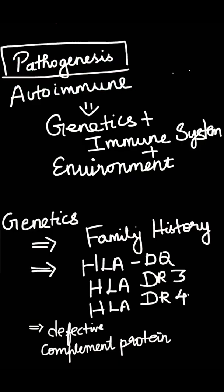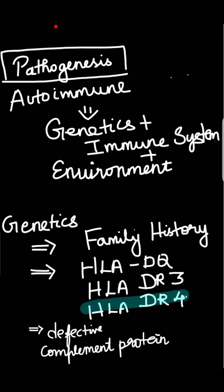For pathogenesis, the important factors involved are genetics, immune system, and environment. In genetics, family history accounts for about 20%, and there is more incidence in monozygotic twins. There is HLA association — HLA-DQ locus is specified. HLA-DR3 is linked to cutaneous lupus, HLA-DR4 is linked to drug-induced lupus. There is also a specific congenital defective complement protein that can lead to SLE.